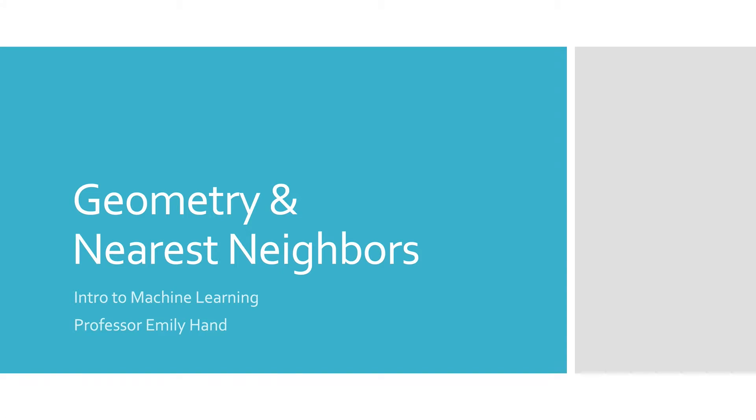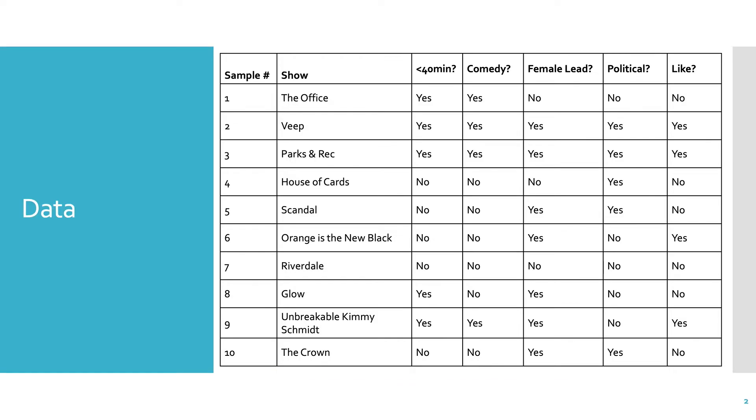This video is going to cover geometry and the nearest neighbors algorithm. So far, we've been talking about data in terms of features. This suggests a geometric view. Each feature can be considered a dimension in some space, and each sample can be a point in that space.